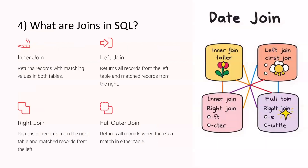Next question: what are the different types of joins? This is one of the most frequent questions. There are mainly four joins: inner join, left join, right join, and outer join. Inner join returns values matching from both tables. Left join returns all records from the left table and the matched records from the right. Right join returns all records from the right and matched records from the left. Full outer join returns all records regardless of whether there is a match.